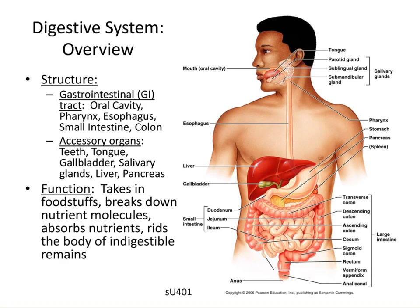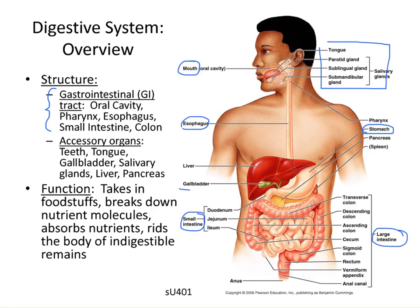This shows you both the digestive system organs and the accessory organs. In the GI tract — the alimentary canal — it starts with the mouth, travels through the esophagus and down to the stomach, then over to the small intestine and the large intestine and out through the anus. The accessory organs include the various structures inside the mouth, the tongue and the salivary glands, the gallbladder, liver, and the pancreas.